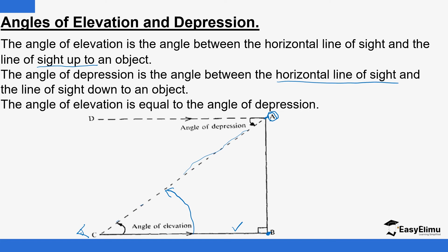So we talk of Angle of Elevation of a particular point. You have to raise it up — the arrow is indicating that you are raising the horizontal line of sight up so that you are able to see an object that is up there. That angle is the Angle of Elevation. The same applies if someone is viewing from a higher point.